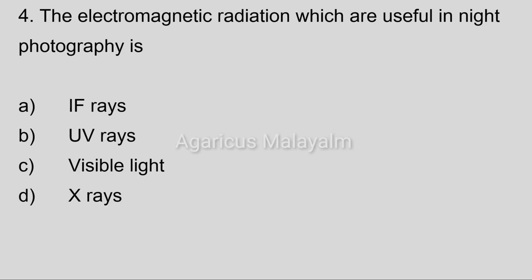Fourth question: the electromagnetic radiation which is useful in night photography is? Option A: infrared rays. Option B: UV rays. Option C: visible light. Option D: X-ray.